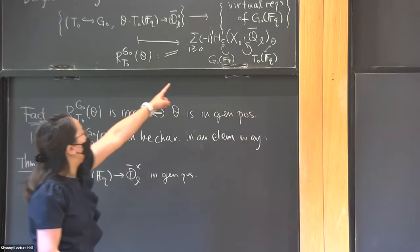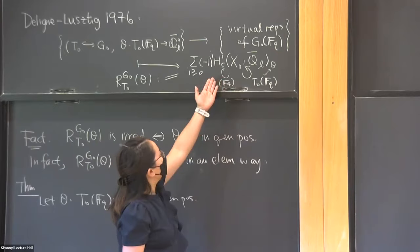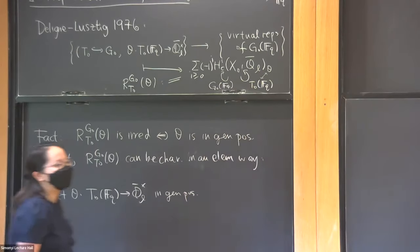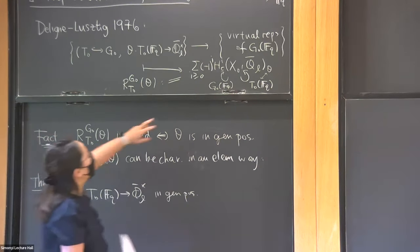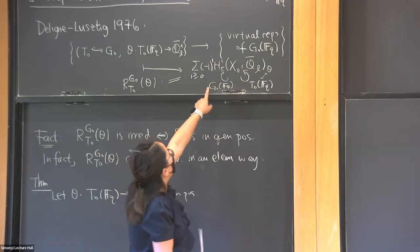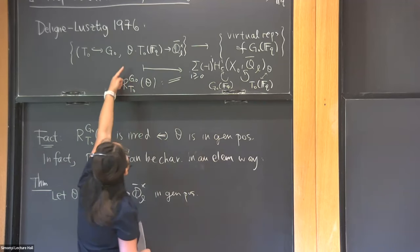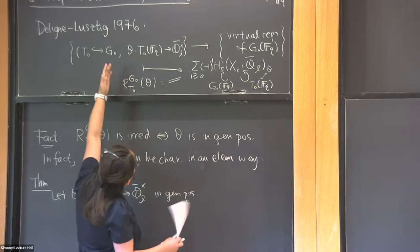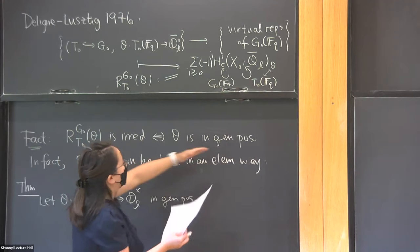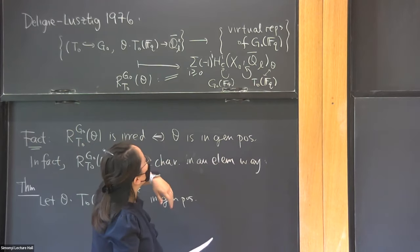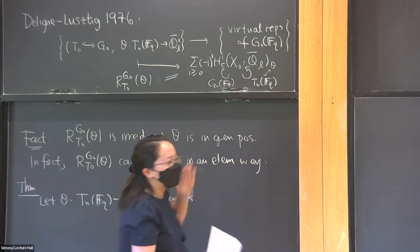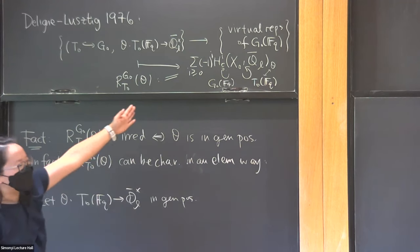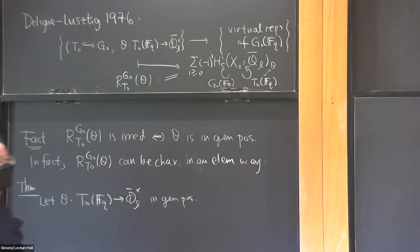For example, in the case of a Drinfeld curve, which I believe predates this story, if you take θ non-singular — which is a slightly bigger class than in general position — then actually this θ-isotypic component will be inside H^1. So as I've defined it, it'll actually be minus the irreducible.